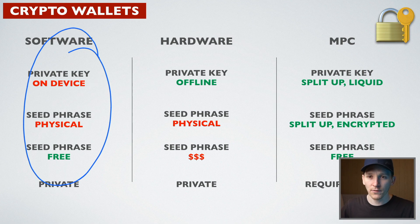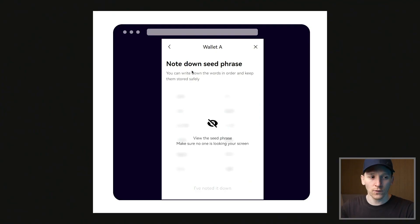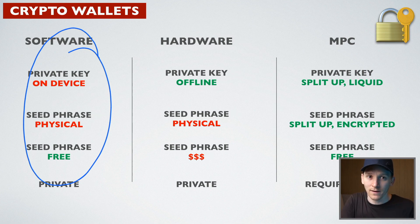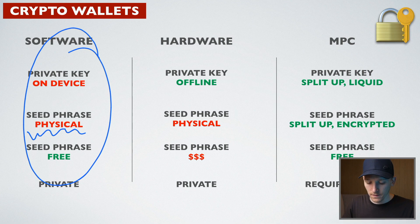The downside is that you're getting a 12-word seed phrase which, on OKX, looks like this — it gives you 12 words and you have to write them down. You have to keep them somewhere safe because if you lose that seed phrase and lose access to the wallet, you'll never get your money back. Also, if someone has your seed phrase, they have all your money because they can just reload it into their device and spend all your coins. So you have to write down the seed phrase physically, and the private key is actually on your phone.